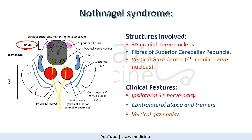Now coming to dorsal midbrain syndrome. First is Nothnagel syndrome. Here there is involvement of the dorsal part, that is the tectum of the midbrain. It includes the third nerve nucleus, fibers of the superior cerebellar peduncle, and vertical gaze palsy. Clinical features will be ipsilateral third nerve palsy, contralateral ataxia and tremors, and vertical gaze palsy.